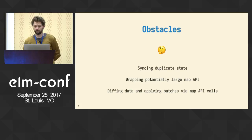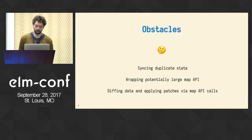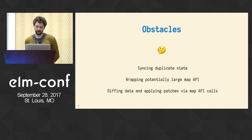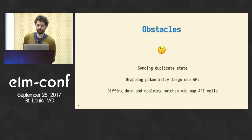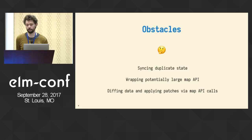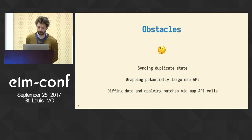Both sides communicate via ports, which is the communication mechanism for peaceful communication between JavaScript and Elm. But when you talk between those two worlds with different paradigms — functional and object-oriented — you often have obstacles. You have your list of people in Elm and your markers on the map, and you have to duplicate the state and sync it. You have to wrap the large map API, do data diffing, and apply patches when data changes.